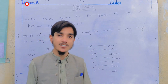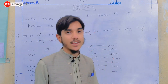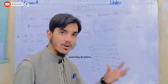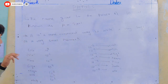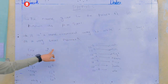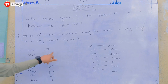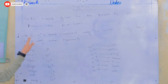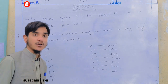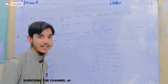So, if you want to use a name for a power of 10, then you can use a specific prefix name. For example, 10 to the power 3 is called Kilo, 10 to the power 6 is called Mega, and 10 to the power 12 is called Tera. These names are called prefixes.